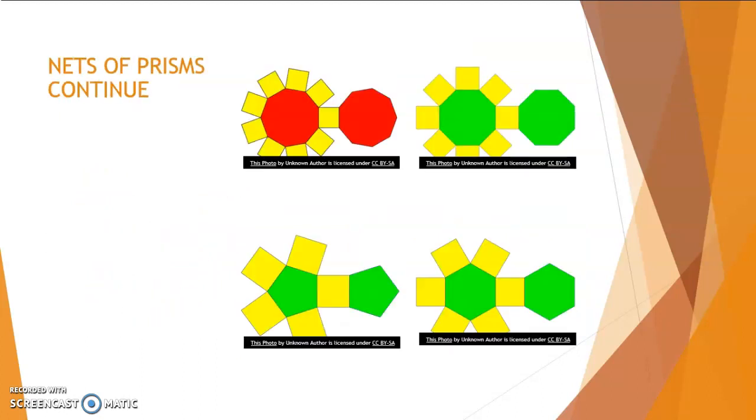If we continue and we look at our first shape here, it has nine sides. So it's a nonagon and it's a nonagonal prism. Why prism? Because of my side faces which are squares.